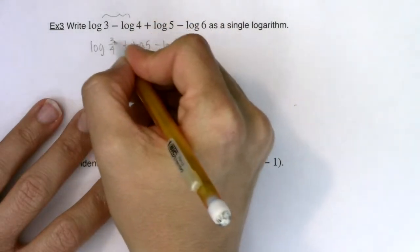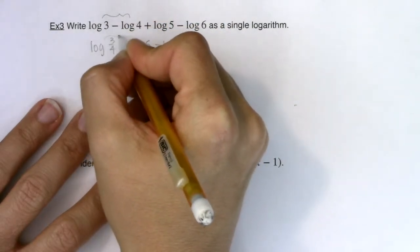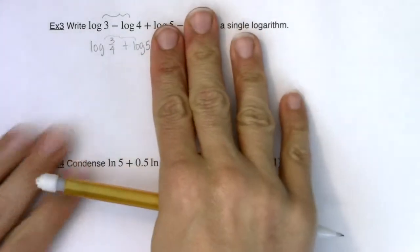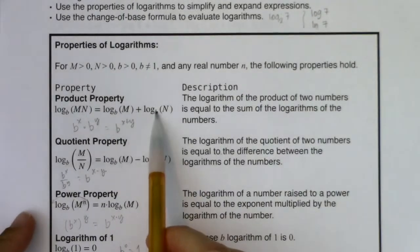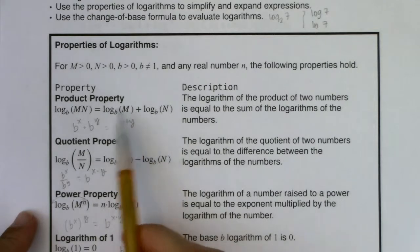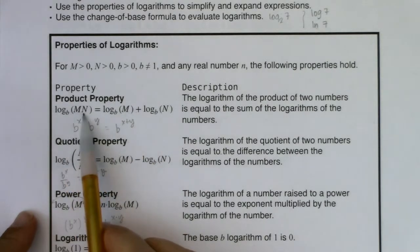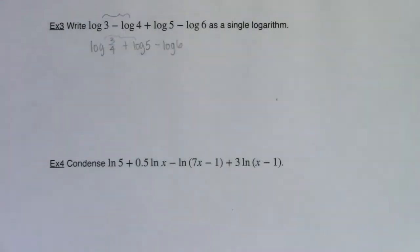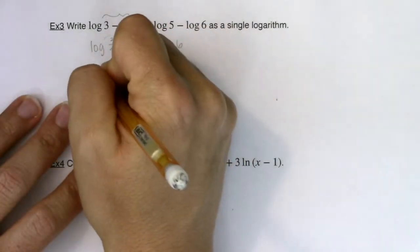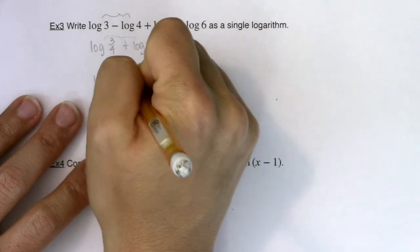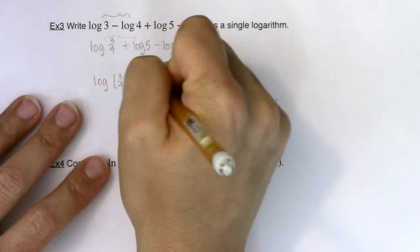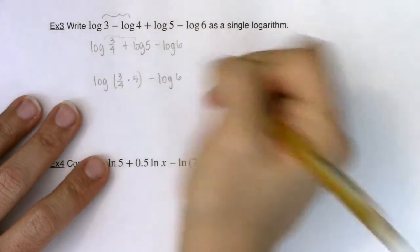So let me combine these two now. And now take note that I am adding two logarithms together. So when you add two logarithms together, you can simplify that using the product property when you combine them as one logarithm and your argument is a product. So let's go ahead and say that this is now equal to log of 3 fourths times 5. And don't forget your log 6 here.